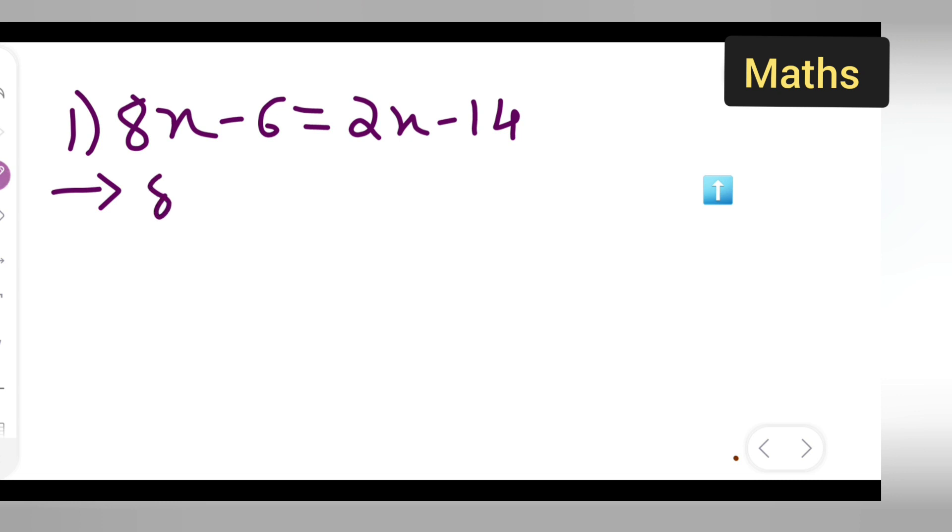So let me start. First write down 8x minus 2x is equal to minus 14 plus 6.